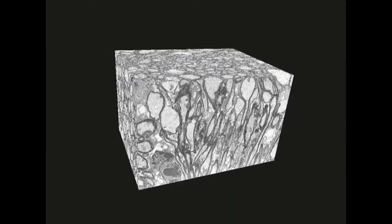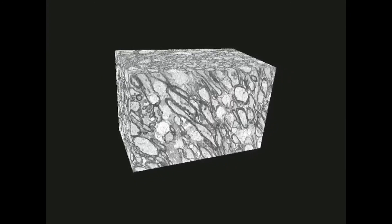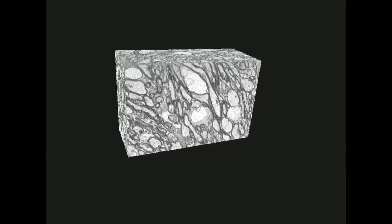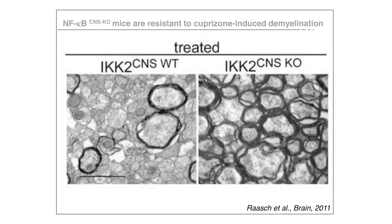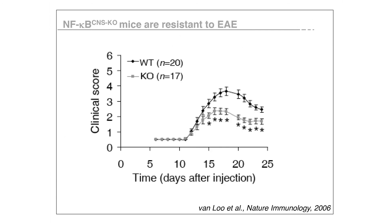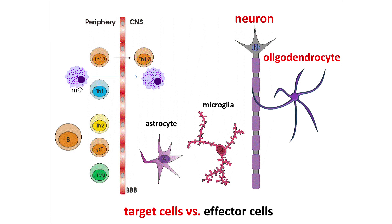NF-kappa-B plays a fundamental role in the pathogenesis of multiple sclerosis. NF-kappa-B activation in T and B cells, which are immune cells in the periphery, is crucial for the induction of the disease. We also know that NF-kappa-B activation within the central nervous system is crucial during MS pathogenicity. Genetic inhibition of NF-kappa-B in all cells of the central nervous system resulted in protection from multiple sclerosis. NF-kappa-B activation in oligodendrocytes and neurons is believed to protect them from undergoing cell death.